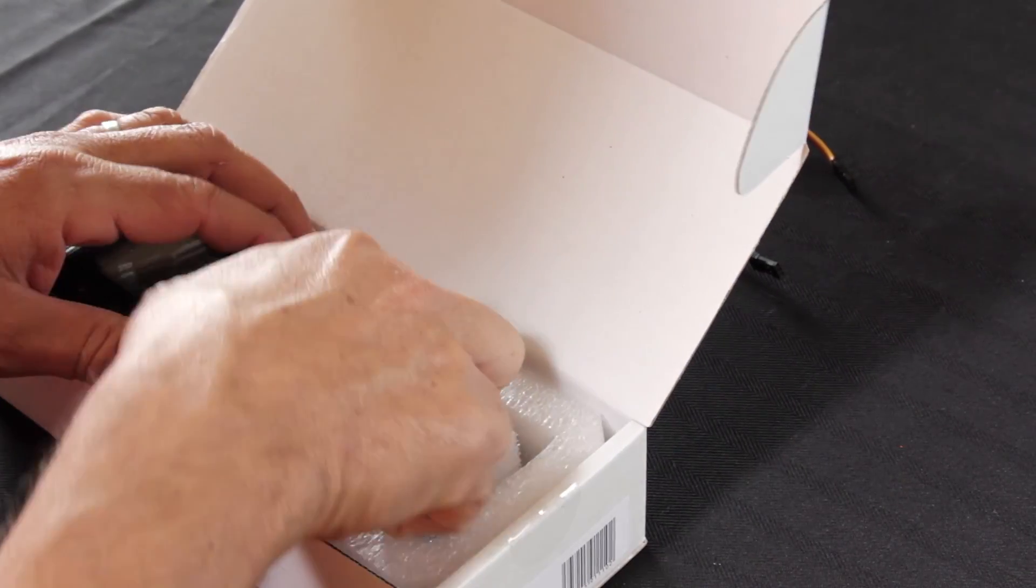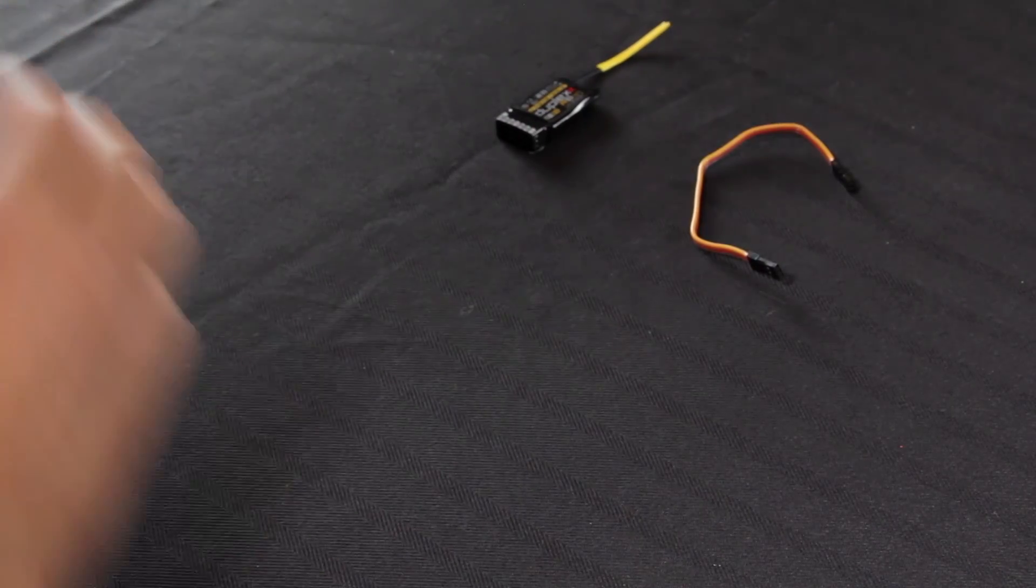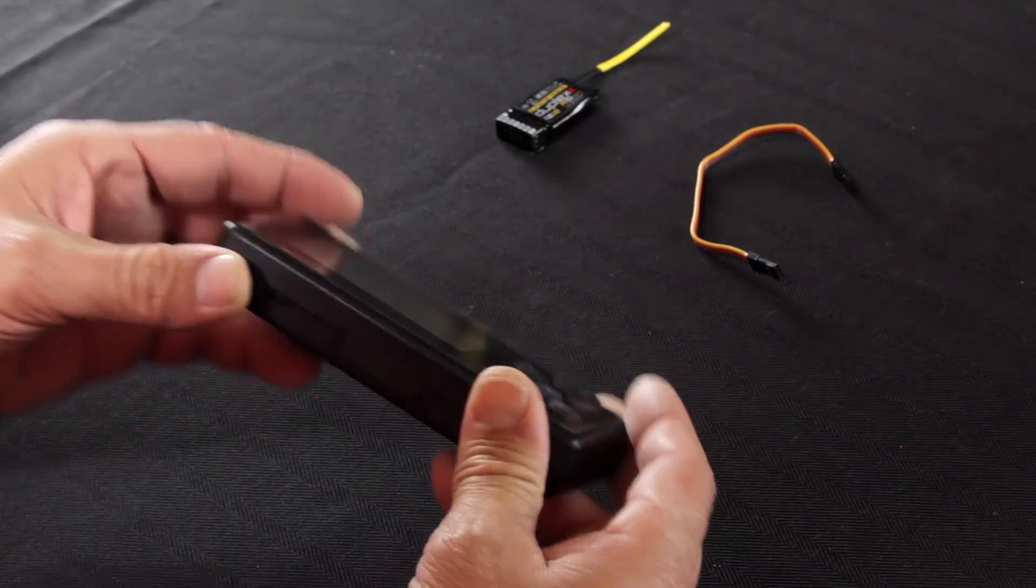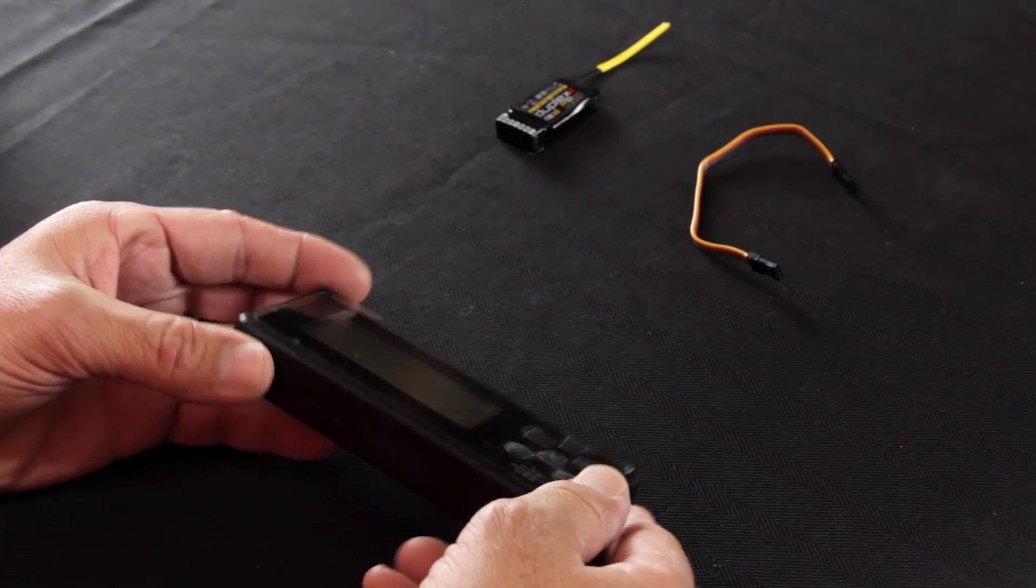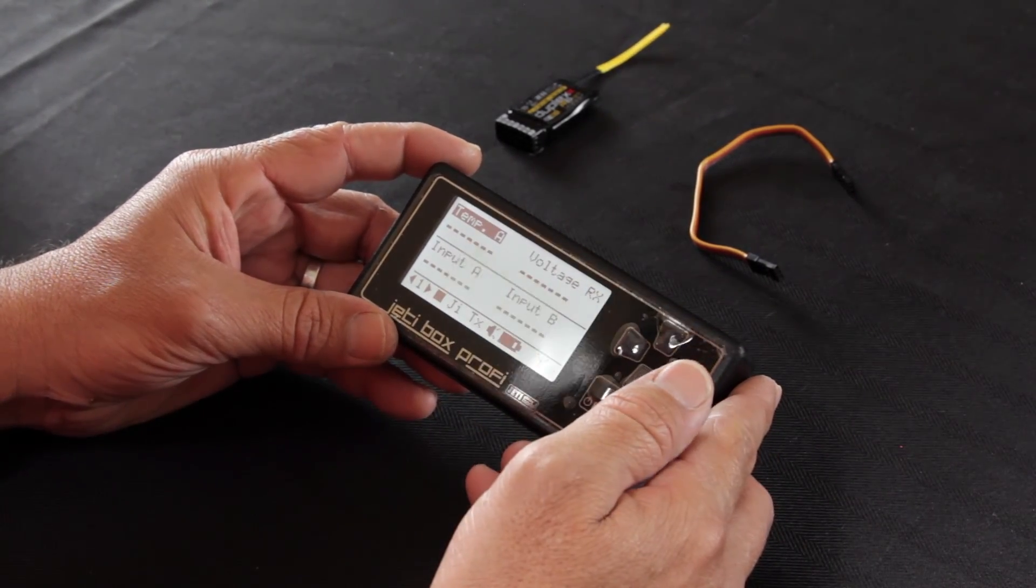You receive your Jetty box, take it out of the nice packaging and set that packaging aside. First step is of course flip the switch to turn the main battery power on. Hit the Escape key, that'll turn the unit on for you.